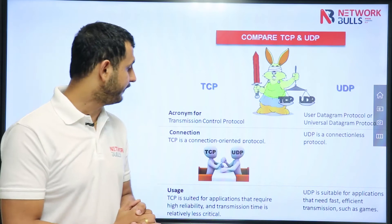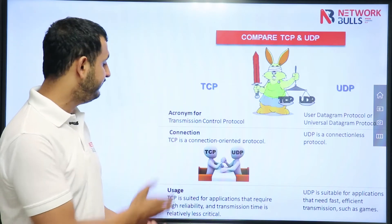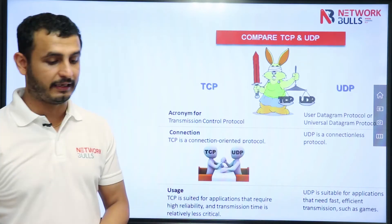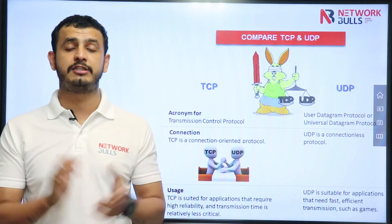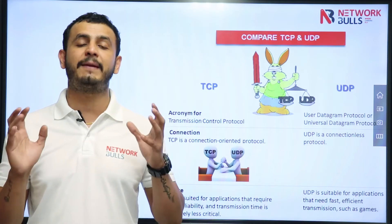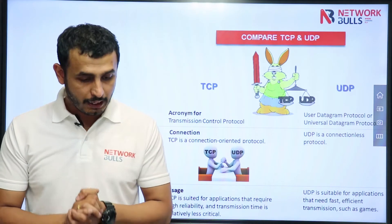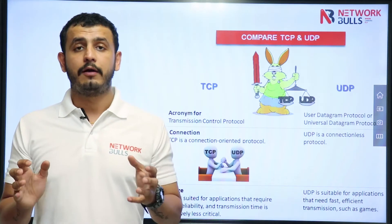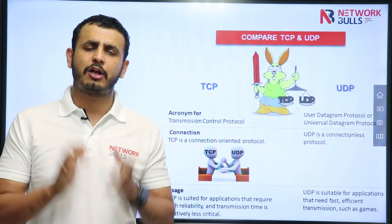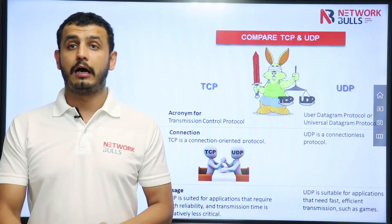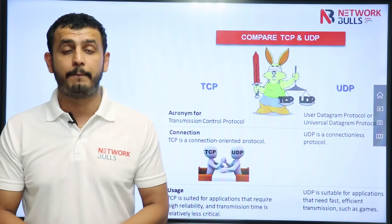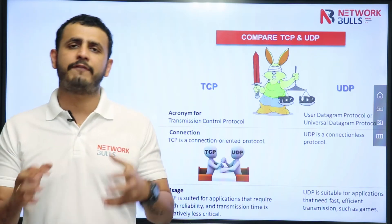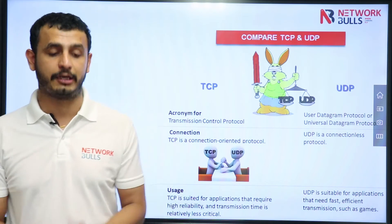Now let's discuss the first difference. TCP is connection-oriented, whereas UDP is connectionless. If I talk about usage, TCP is used for applications which require a lot of reliability, and for applications for which acknowledgement is a must or there should be in-order delivery of data. But UDP is used for applications which want faster communication, or for video and voice communication.